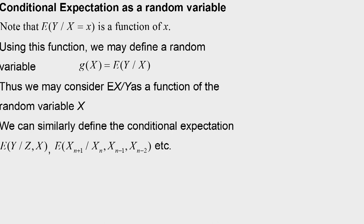When we plot this conditional expectation as a function of x, because it is a function of x, this is known as the regression of Y on X. Note that E[Y | X = x] is a function of x. Therefore, using this function we can define a random variable g(X) = E[Y | X], where this part is random. Considering all possible values of X, this is a function of a random variable, and that way conditional expectation will now be a random variable in terms of X.